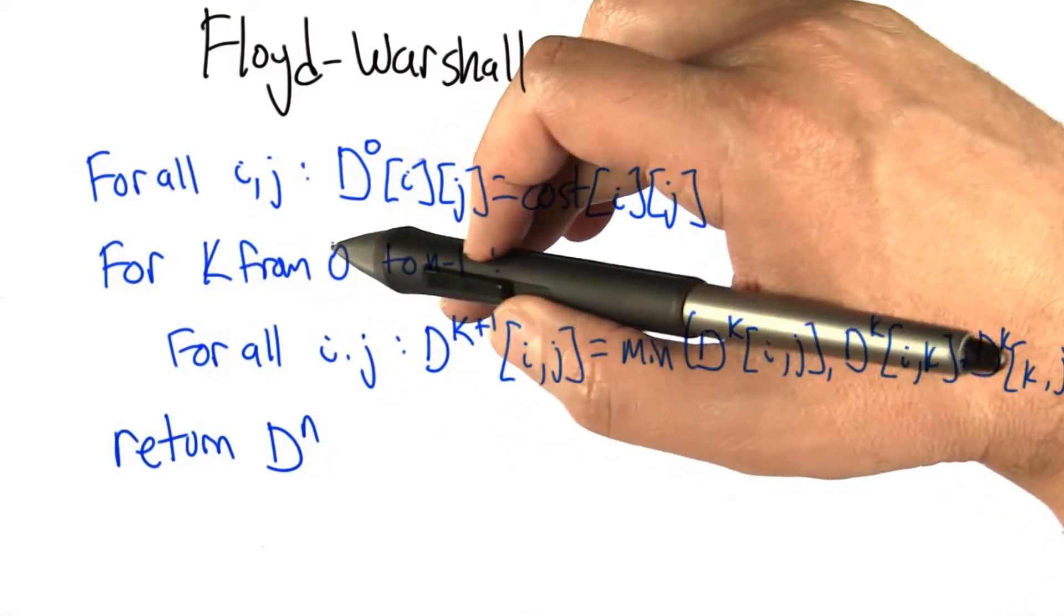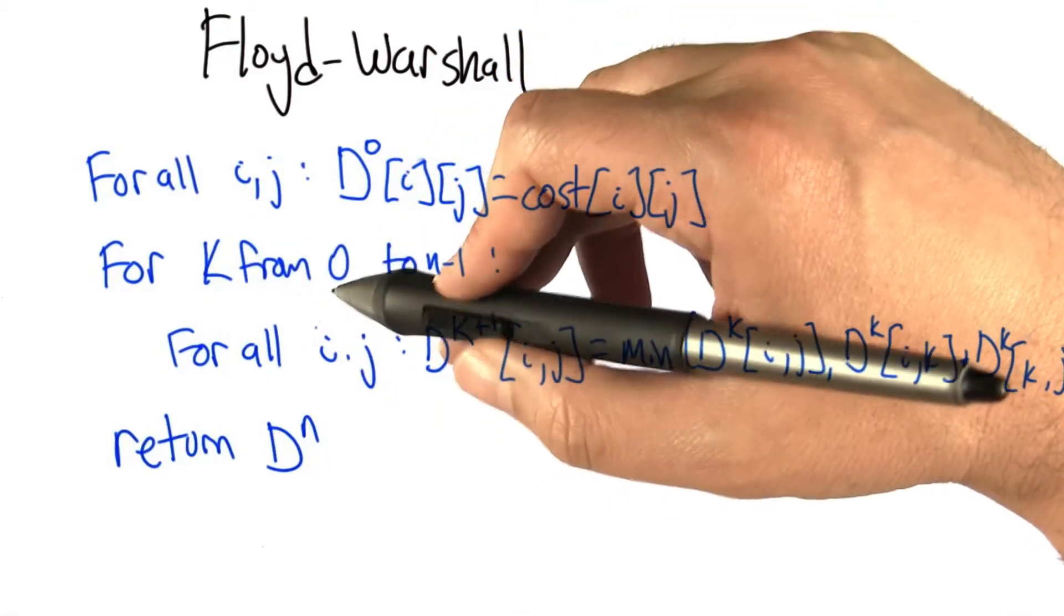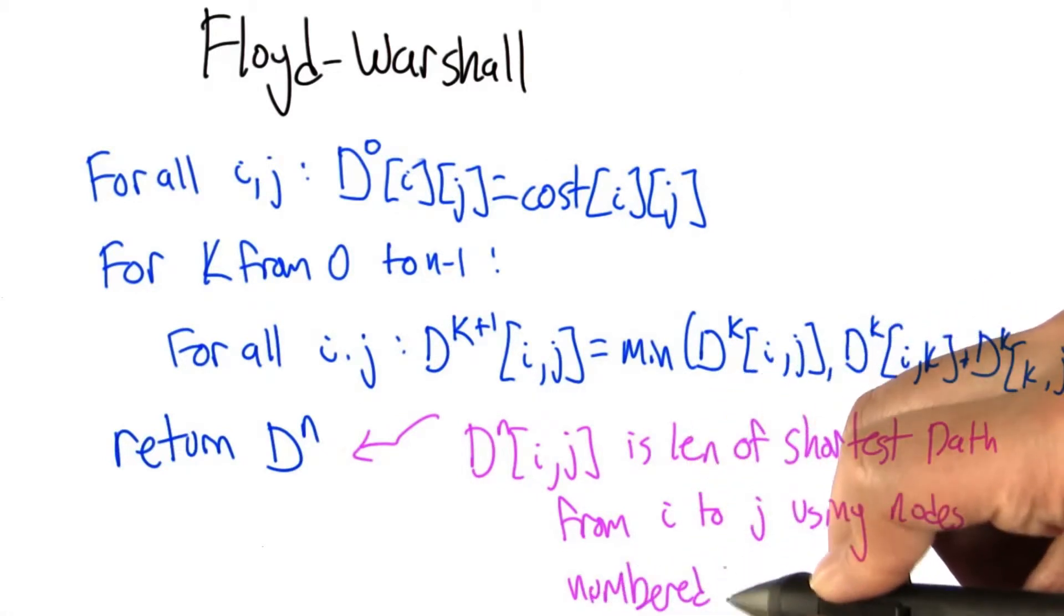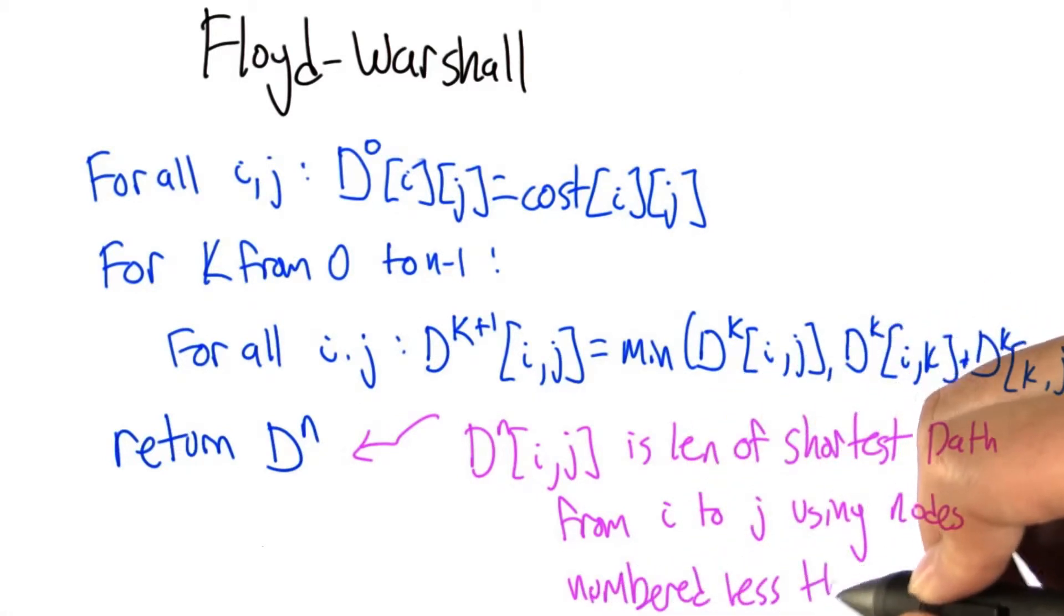we can run k from 0 to n-1, and for each pair i and j, we take D^(k+1)[i,j] to be the minimum of D^k[i,j] and D^k[i,k] + D^k[k,j], just as I was describing before.